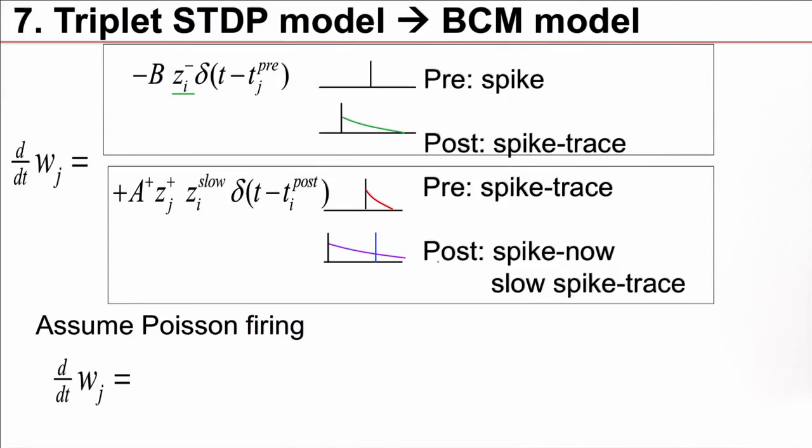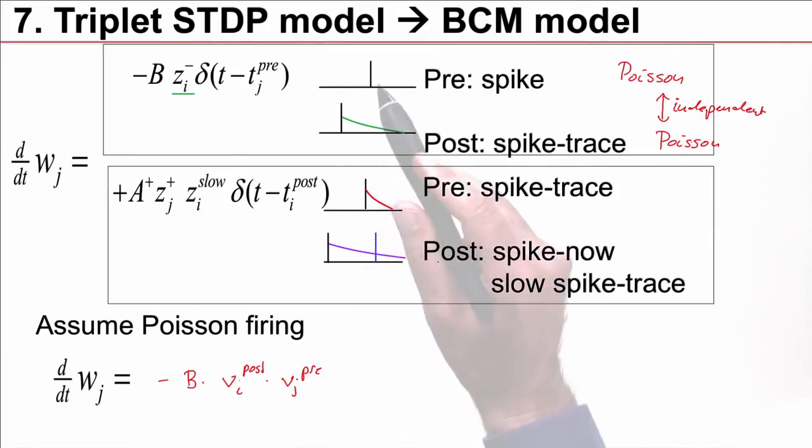Now, with this model, it gets more complicated. However, we can try to do again the transition to rate models. So, suppose I have the pre-synaptic spikes coming with a Poisson spike arrival rate and the post-synaptic spikes come with a Poisson rate. And I say these two are independent just to keep things simple. Then this will create a contribution minus b nu i post times nu j pre where this is the pre-synaptic rate and the post-synaptic rate. I need two spikes. If I increase the rate, the probability that the two spikes are close to each other will increase with the pre-synaptic rate and with the post-synaptic rate.